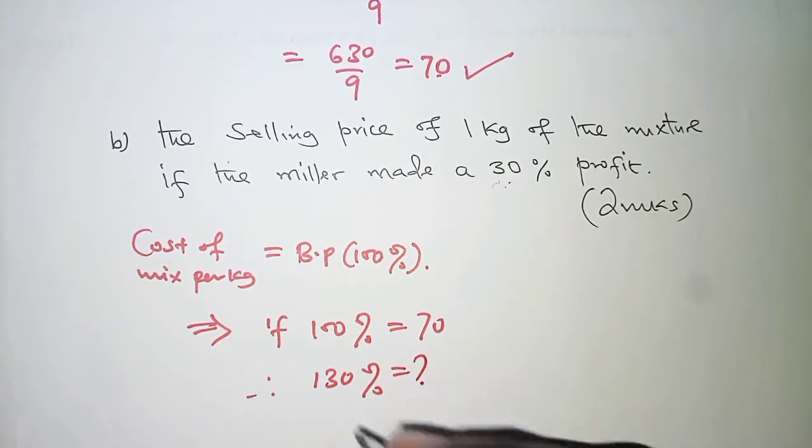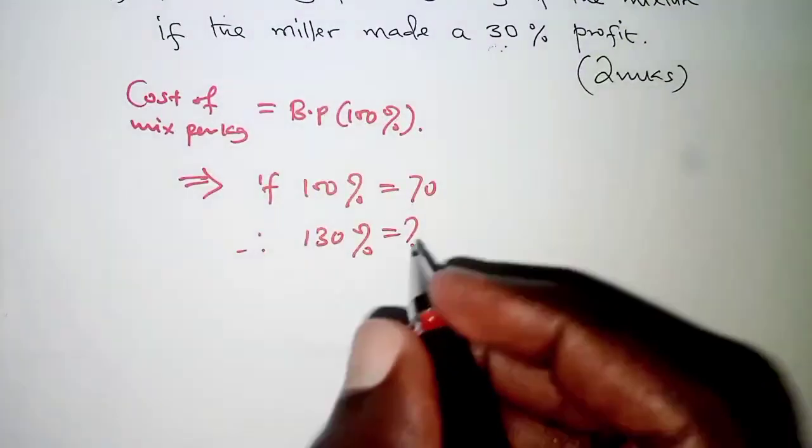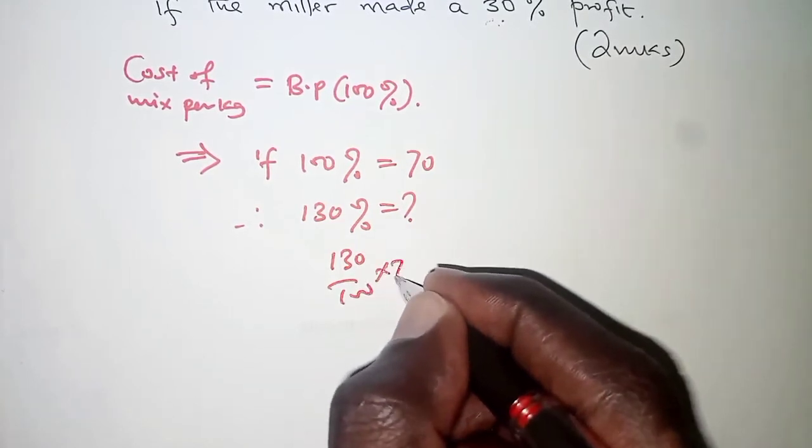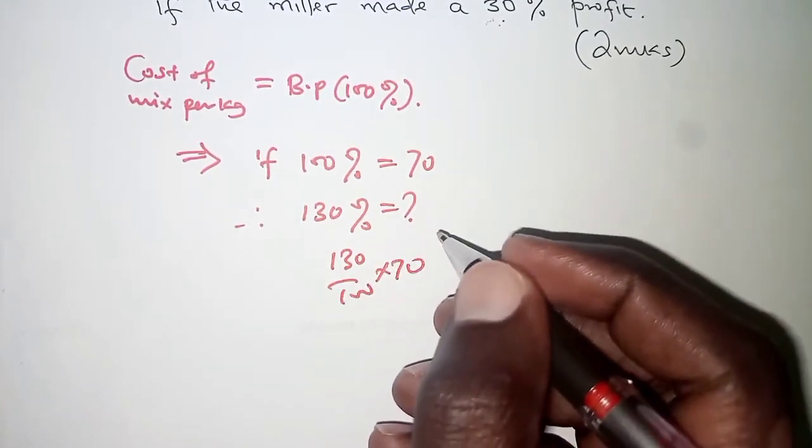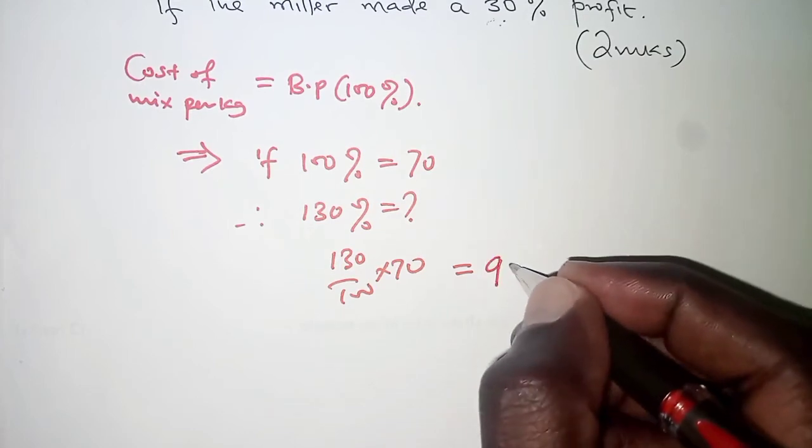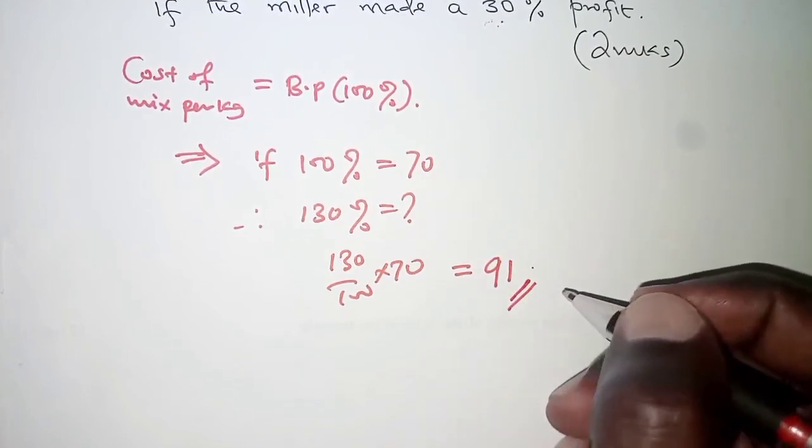This will be what? This is for selling price. Cross multiplying will get 130 over 100 times 70. And that should give us 91 shillings.